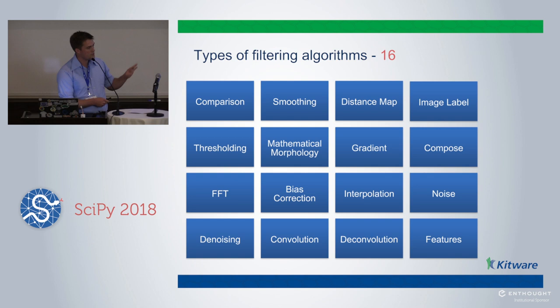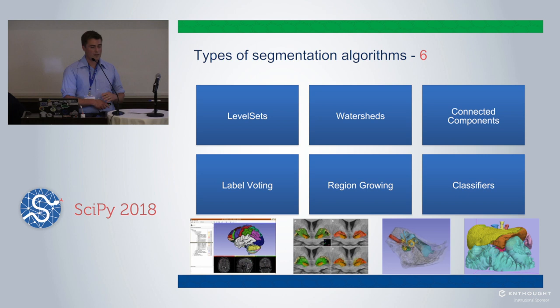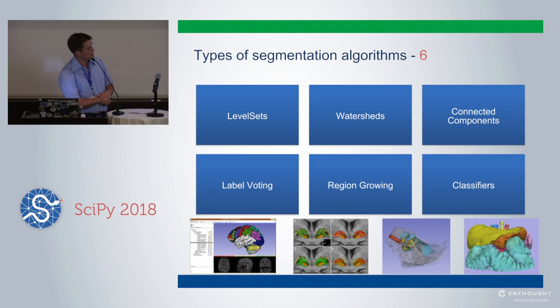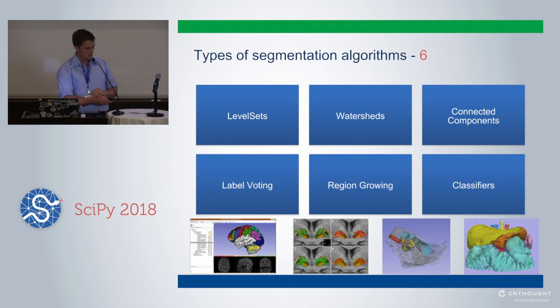The filtering functionality includes computing gradients, smoothing operations, and deconvolutions. There are different types of segmentation algorithms in different categories — a very nice n-dimensional level set implementation, watersheds, connected components, label voting, region growing. There are classifiers, although these days you would probably use some machine learning library — scikit-learn or one of the deep learning libraries — to do the classification itself.